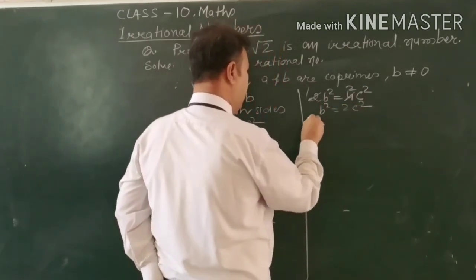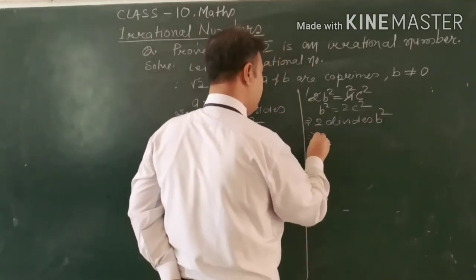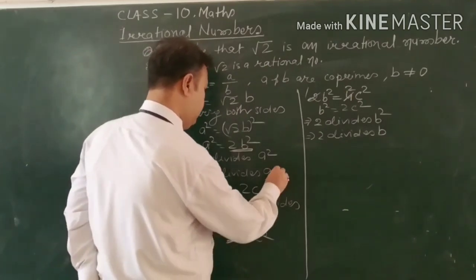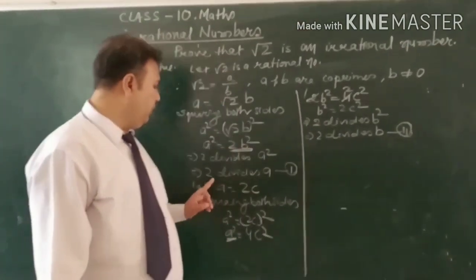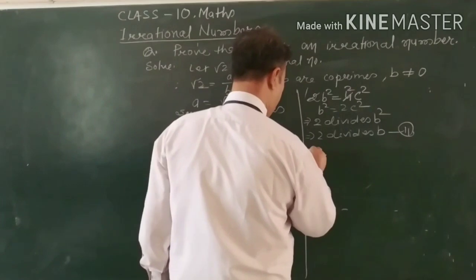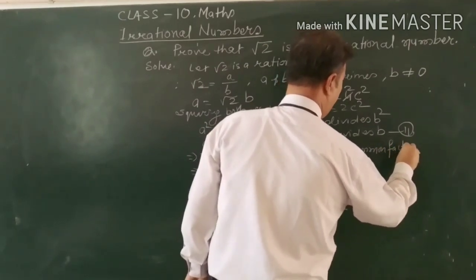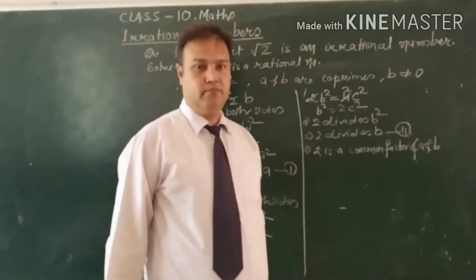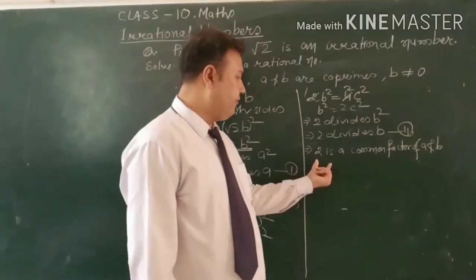This gives b squared equals 2c squared, which means 2 divides b squared, which means 2 divides b. From equation 1 and equation 2: 2 divides a and 2 divides b, meaning 2 is a common factor of a and b. But our assumption was that a and b are co-prime — that is, there is no common factor other than 1. But we are finding 2 as a common factor.